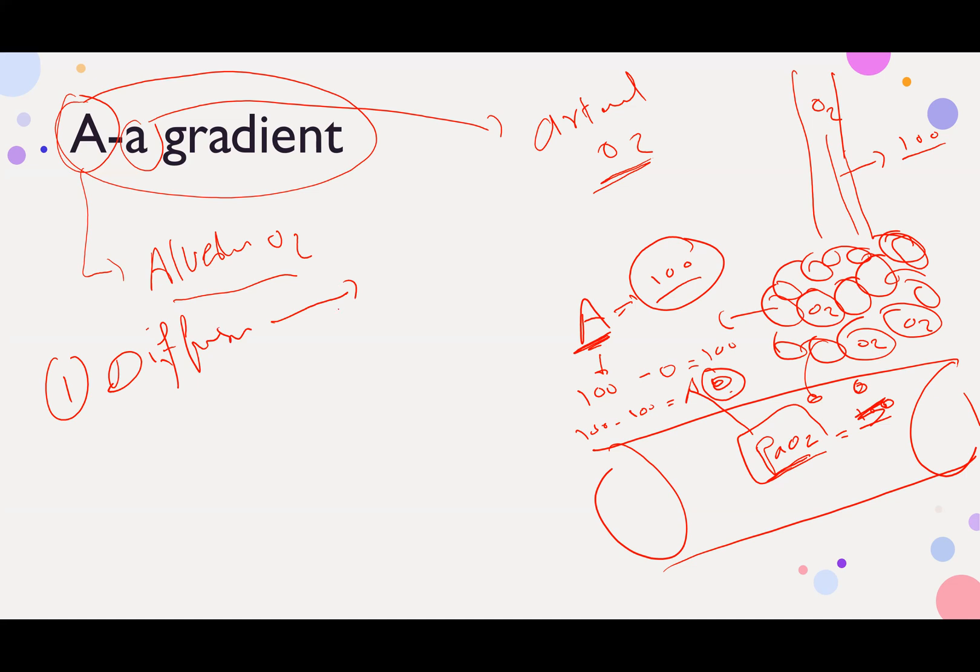What is the example of diffusion defect? Emphysema patients have diffusion defect. Also ILD, interstitial lung disease, has diffusion defect.